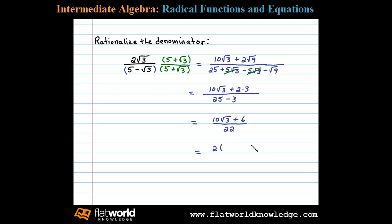If we factor that out, it'll then cancel with a 2 in the denominator. Factoring a 2 out of the numerator will be left with 5 square root of 3 plus 3, and then finally dividing out a 2 will be left with a factor of 11 in the denominator.